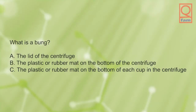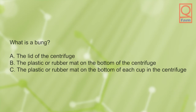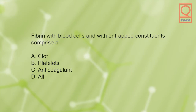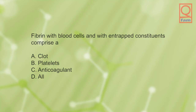What is a bung? A) the lid of the centrifuge, B) the plastic or rubber mat on the bottom of the centrifuge, C) the plastic or rubber mat on the bottom of each cup in the centrifuge. The answer is C, the plastic or rubber mat on the bottom of each cup in the centrifuge.